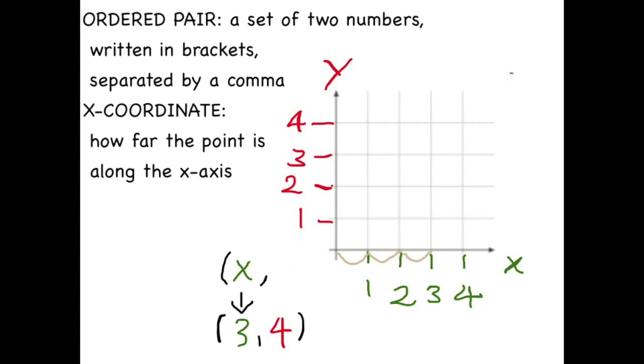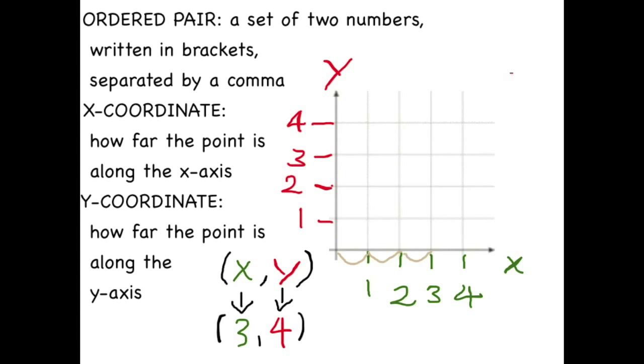The second number of the ordered pair is the Y coordinate. It represents how far the point is along the Y axis, or vertical axis. Here, our Y coordinate is 4.